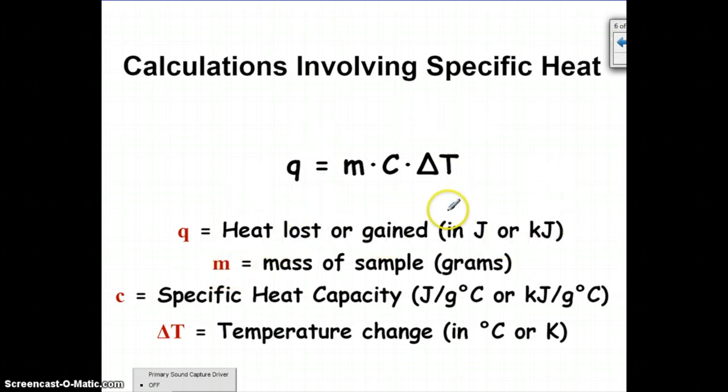On those portions, we're going to be able to use Q equals mc delta T, c being specific heat, which we just talked about. Specific heat can have two different units. You can either have joules per gram degree Celsius or kilojoules per gram degree Celsius.